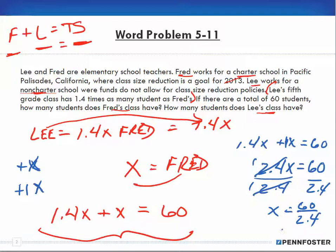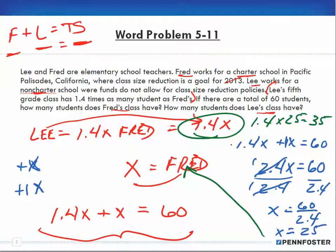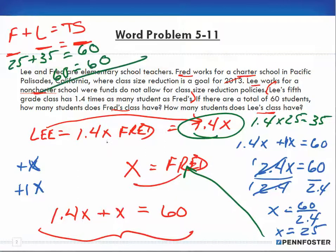X equals 25. So Fred has 25 students. Lee is 1.4 times 25, which equals 35. Now, our double check: Fred plus Lee is 25 plus 35, which equals 60. And 60 does equal 60, so I know my X is correct.